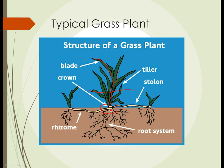A grass plant has a typically fibrous root system without a major taproot, and it anchors it into the soil. A grass plant's root system can be quite deep. Prairie grass root systems are known to go seven to eight feet deep into the soil, and even deeper in some cases.